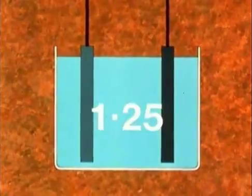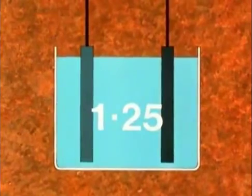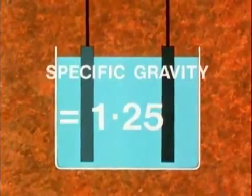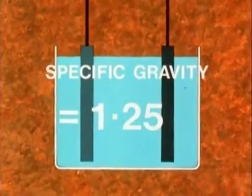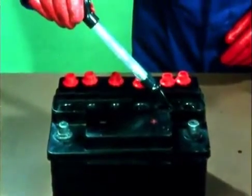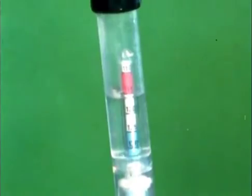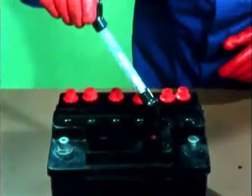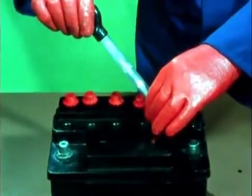Now we need to know when a battery needs recharging, and this is checked with this instrument — a hydrometer. When a cell is fully charged, the electrolyte is exactly 1.25 times the weight of the same amount of water. We say it has a specific gravity of 1.25. A hydrometer measures specific gravity. It is shown by the figure on the float where the surface crosses it. Here it is 1.16 — that means the cell is discharged and needs recharging. You should test the specific gravity in every cell of the battery.